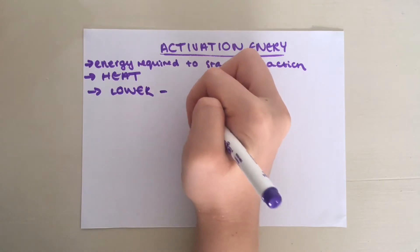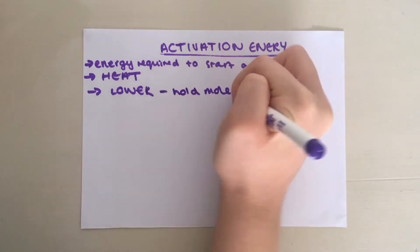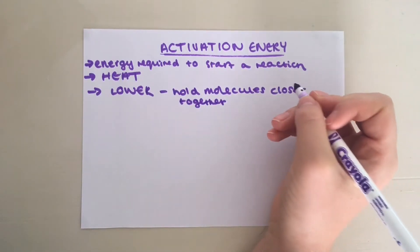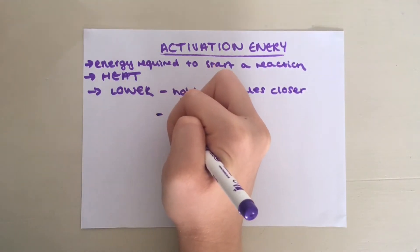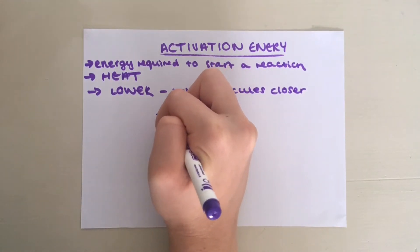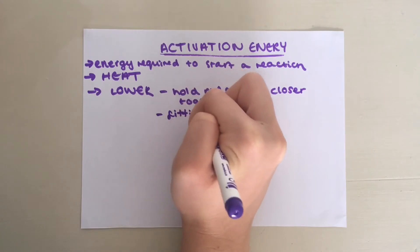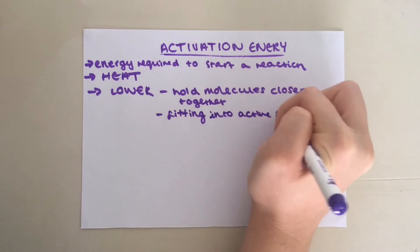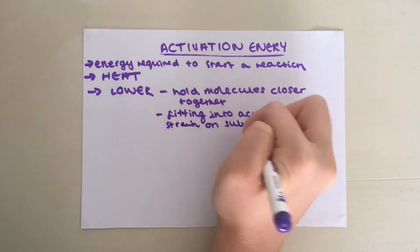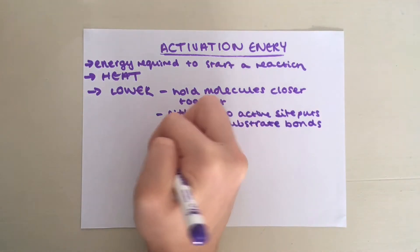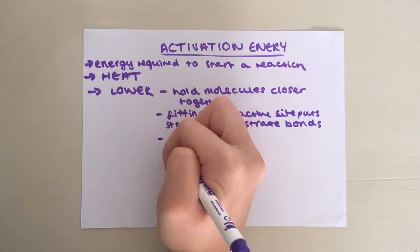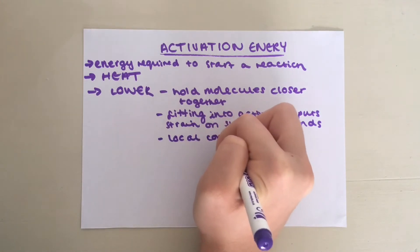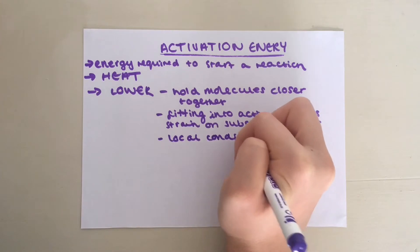Firstly, they can hold molecules closer together, reducing repulsion so they can bond more easily. Secondly, fitting into the active site puts strain on the bonds in the substrate so it breaks up more easily. Thirdly, enzymes can make local conditions inside the active site very different from those outside — for example, pH — so the reaction is more likely to happen.